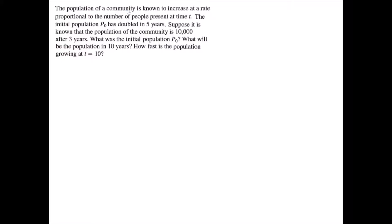The population of a community is known to increase at a rate proportional to the number of people present at time t. The initial population p0 has doubled in five years. Suppose it is known that the population of the community is 10,000 after three years. What was the initial population p0? What will be the population in 10 years? How fast is the population growing at t equals 10?